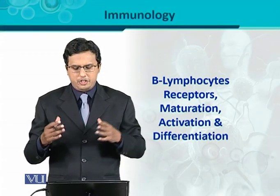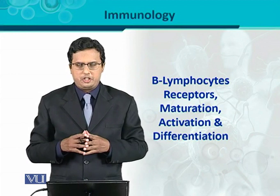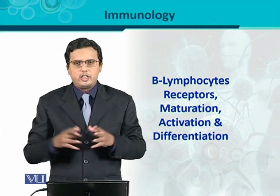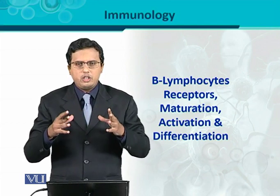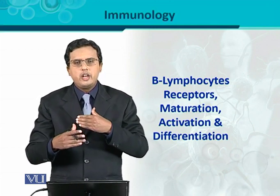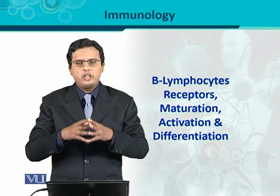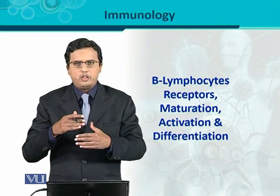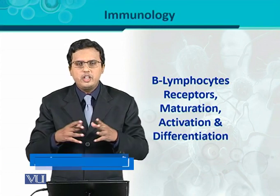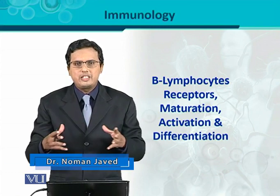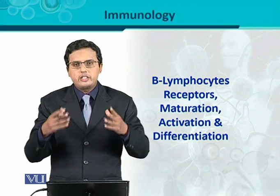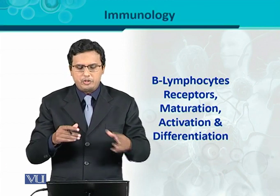B lymphocytes: receptors, maturation, activation, and differentiation. The second important variety of lymphocyte is the B lymphocyte. In this chapter, we will discuss the various aspects of B lymphocytes — how they activate, how they respond to different antigens, and how they produce an immune response. In the case of B cells, the immune response is humoral in nature, meaning secretory molecules like immunoglobulins are produced. This is different from T cell activation, which is cell-to-cell interaction or cell-mediated immune response.